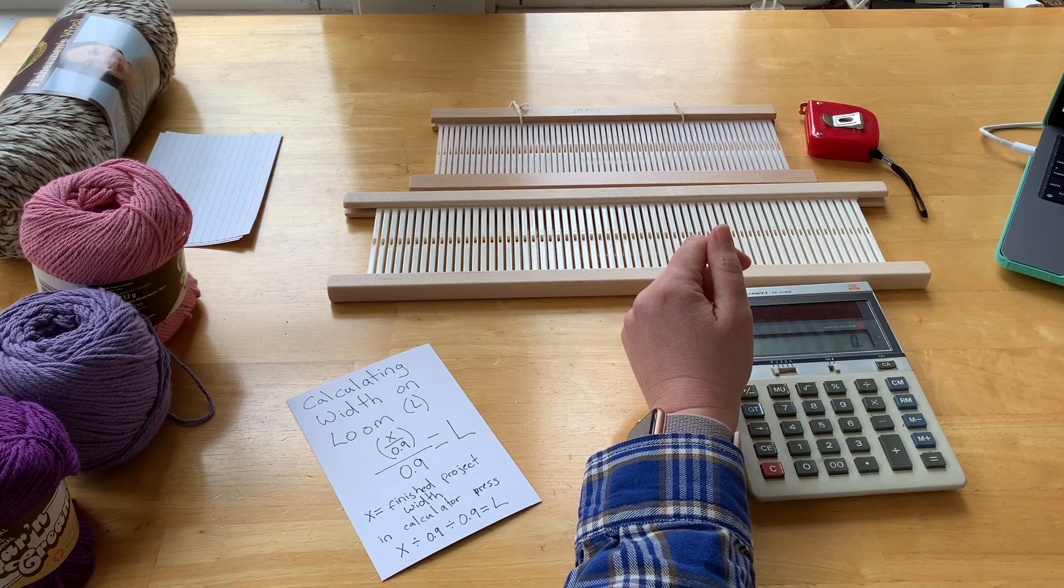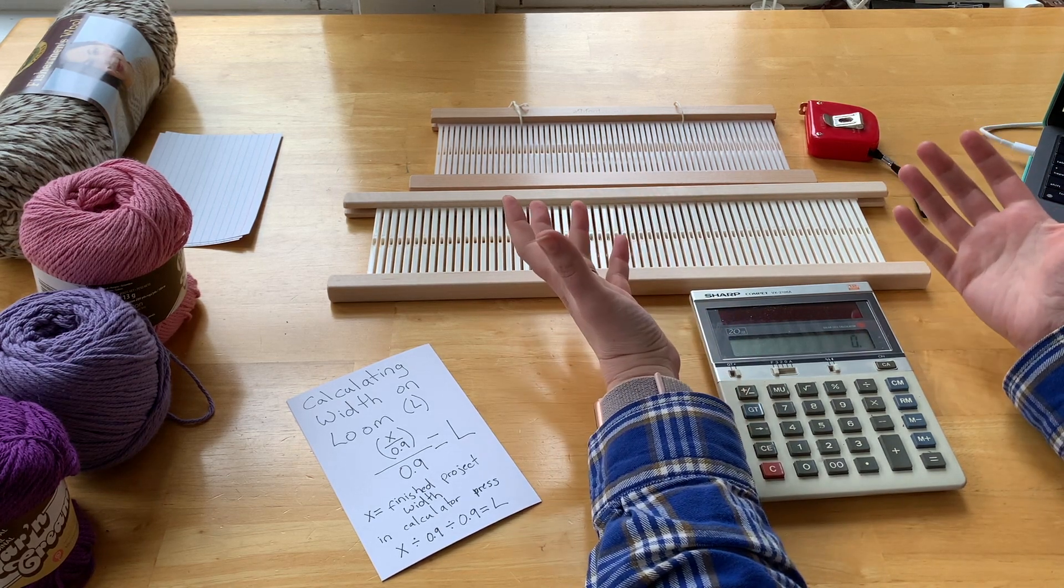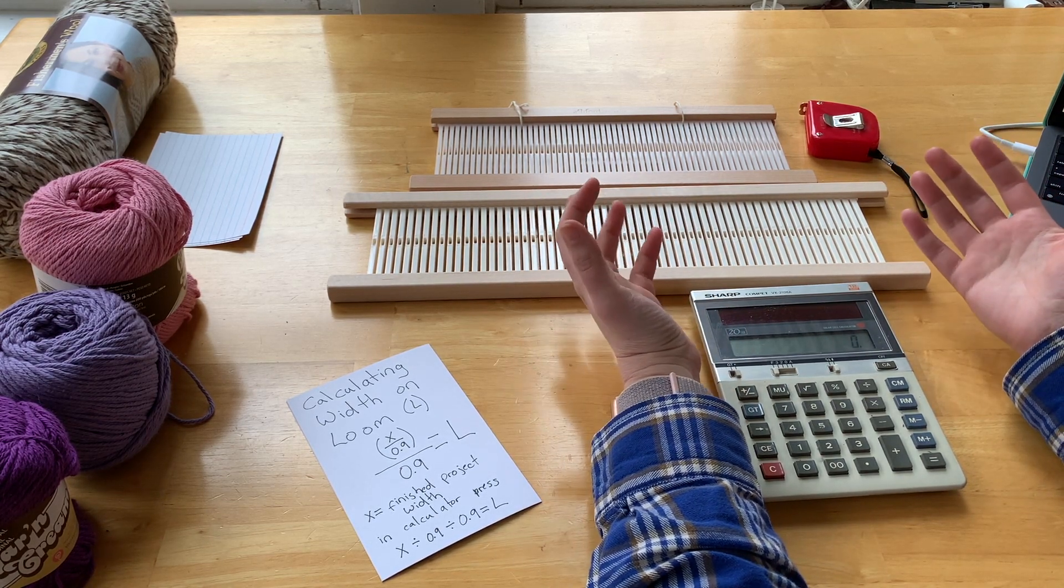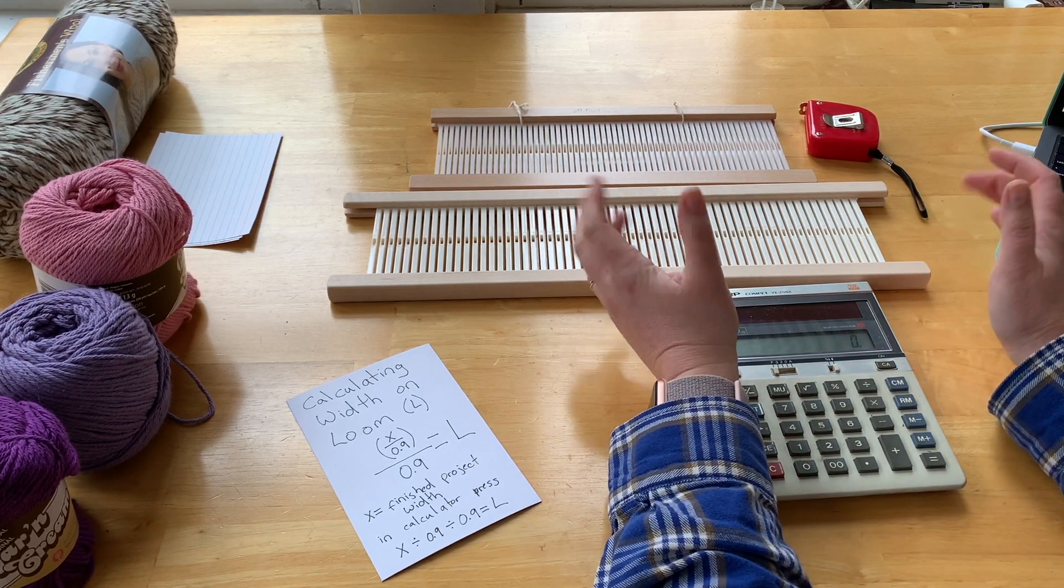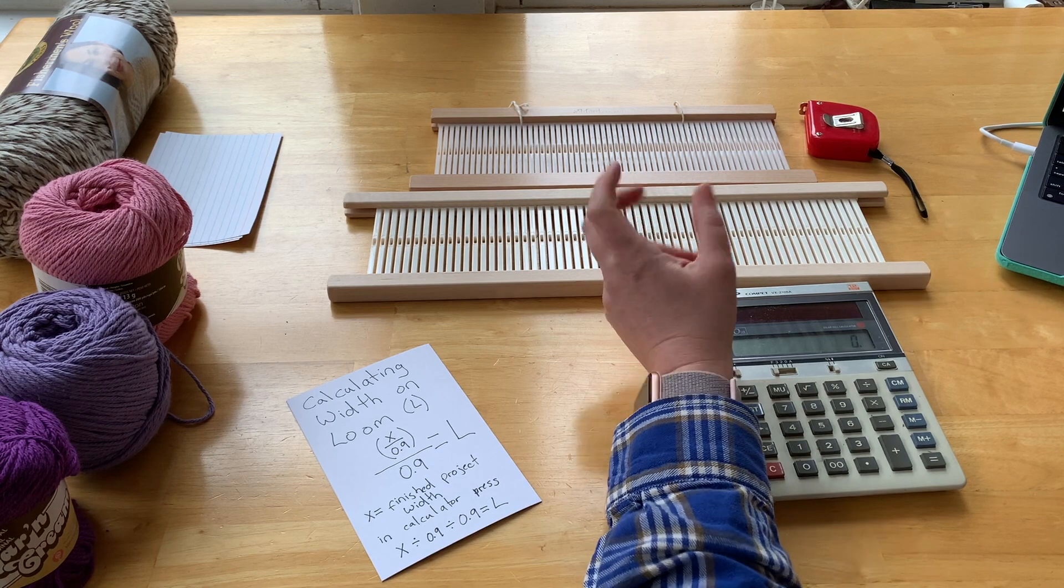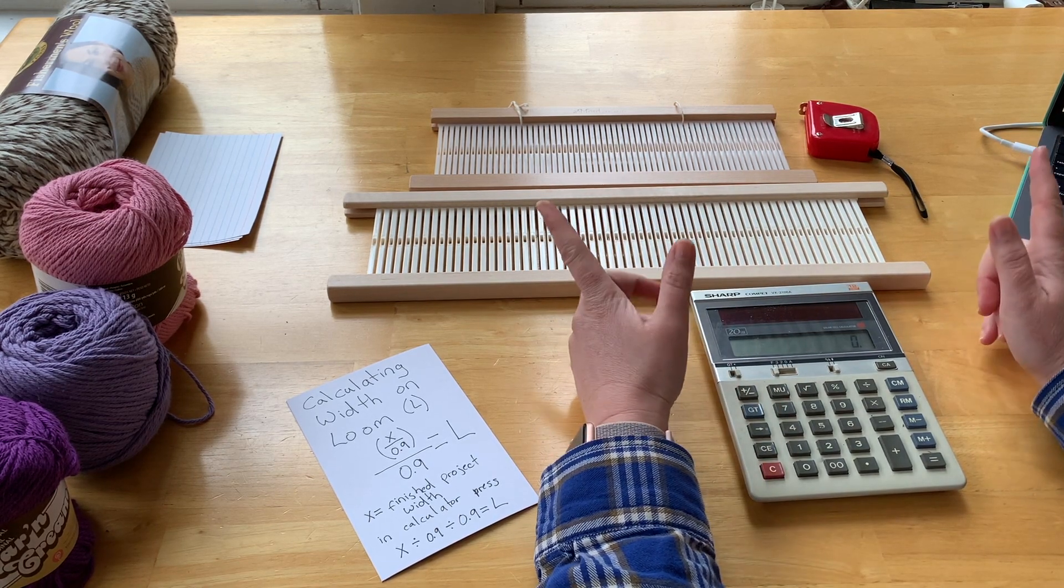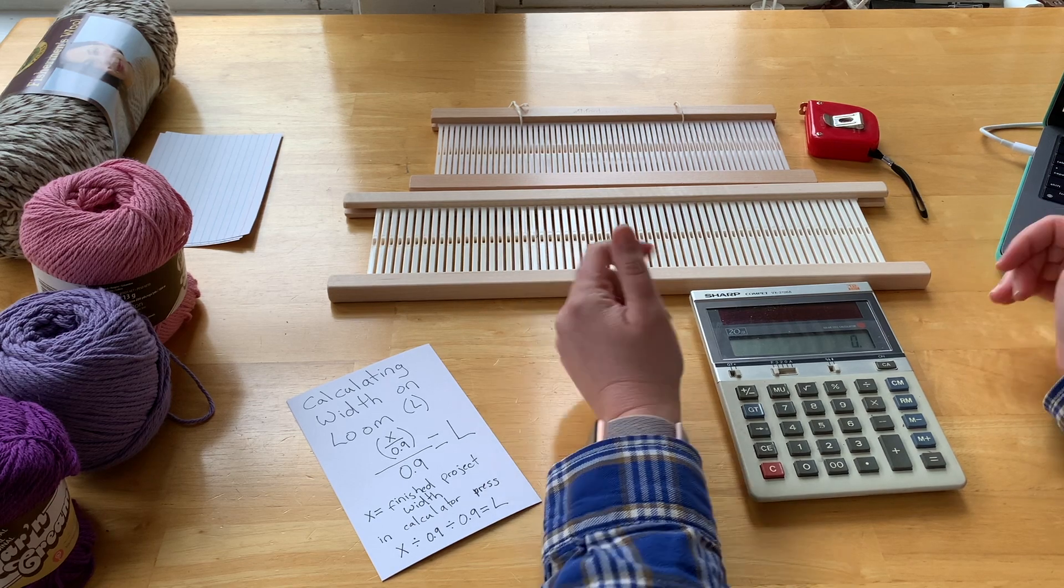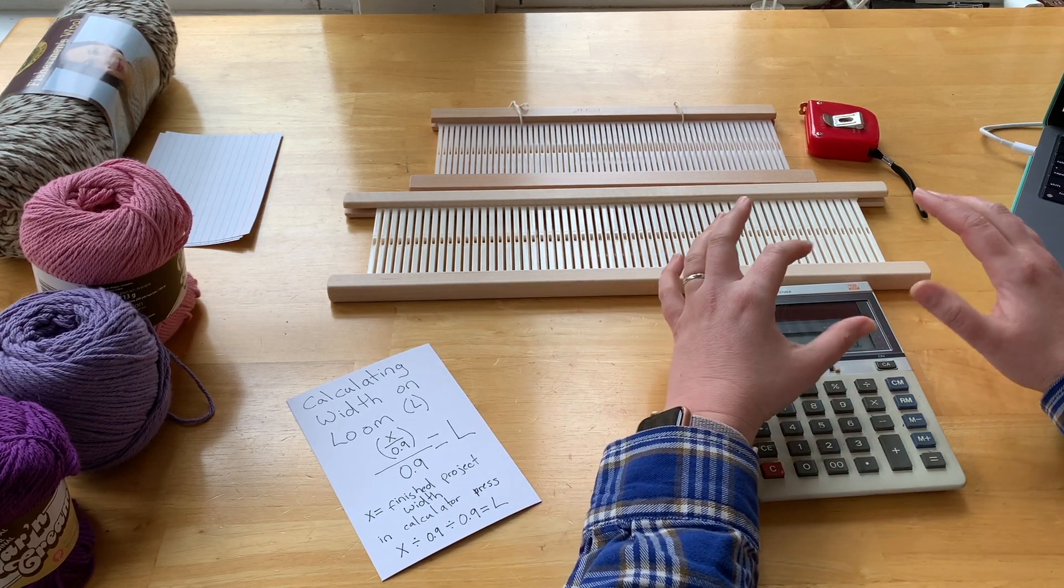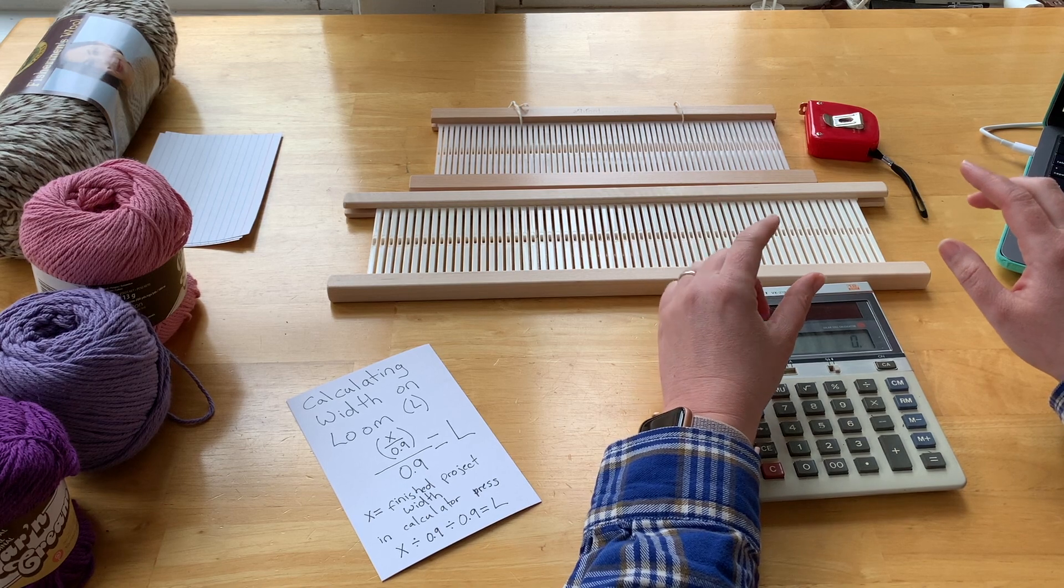If you want a quick shortcut, you would take the width of your final project, which in my case is 24, and you would divide by 0.8. But that tends to make it so that you overestimate how wide your project needs to be.